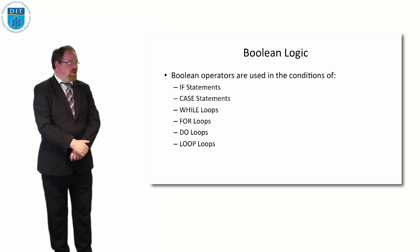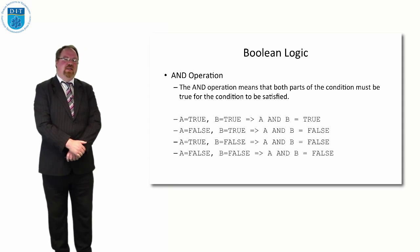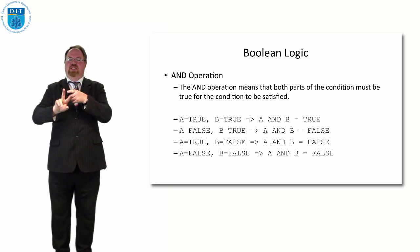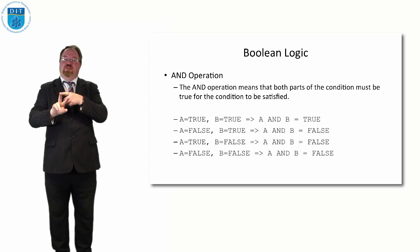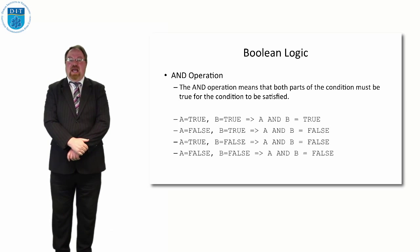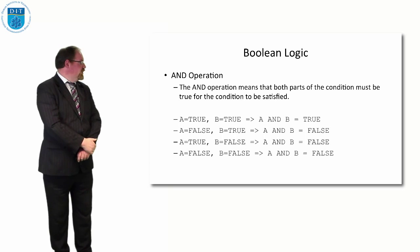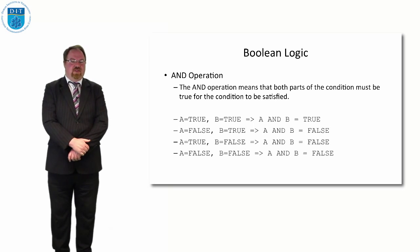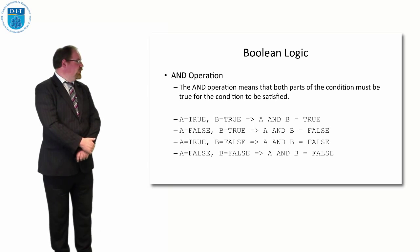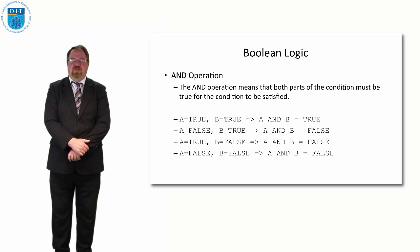So the AND operation, and hopefully you're aware of this, but we'll say it anyway. AND means if I have two parts and I put the word AND in between, both parts have to be true for the overall thing to be true. So if A is true AND B is true, then A AND B is true. If A is false AND B is true, then A AND B is false. If A is true AND B is false, then A AND B is false. And if A is false AND B is false, then A AND B is false.